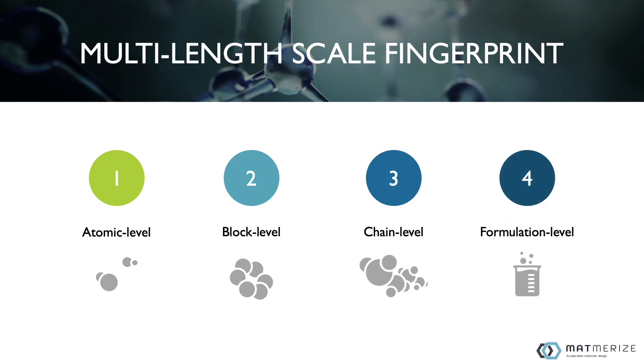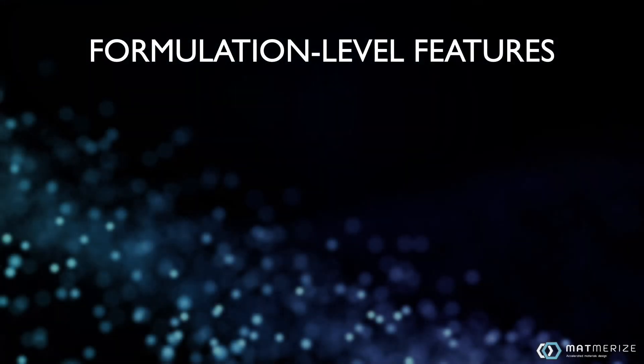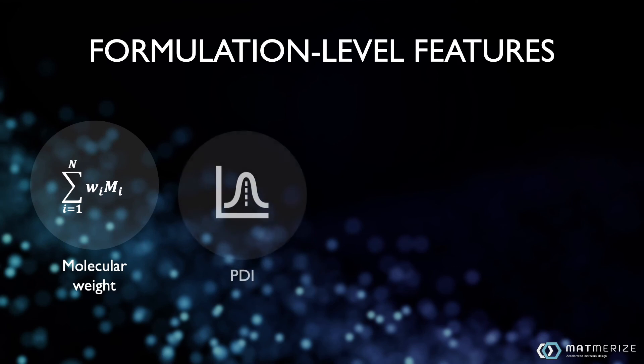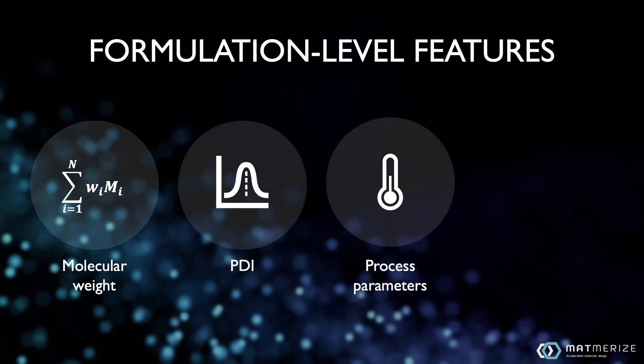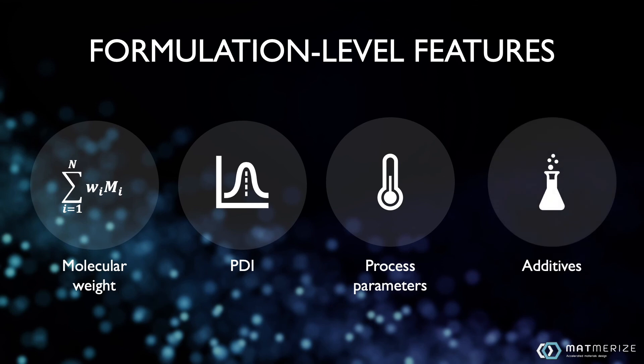Finally, the formulation level considers higher level features. These formulation level features include the molecular weight of the polymer, the polydispersity index, processing parameters such as temperature and cooling rates, and additives that are used in formulation.